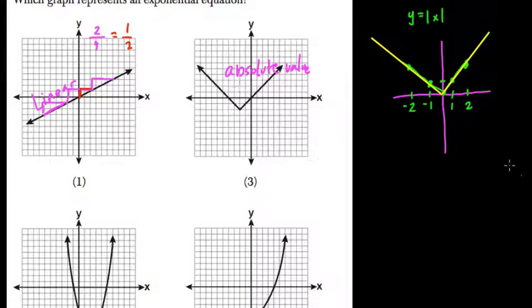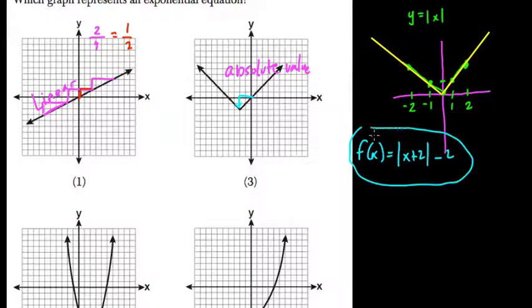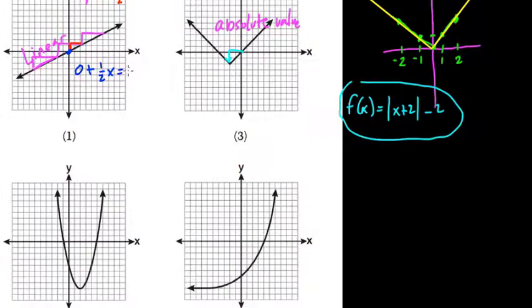Now this absolute value function here has been shifted over to the right and then down. The equation would be something like f(x) equals x plus 2 minus 2, like that. In the first one, it crosses the origin, so our y-intercept is 0 and our slope is 1 over 2, so it's 1/2x equals y.